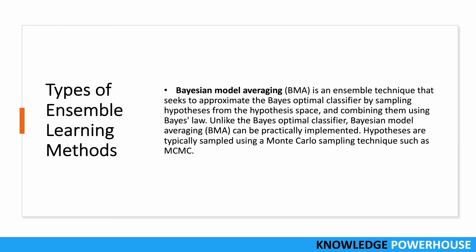Bayesian model averaging (BMA) is an ensemble technique that seeks to approximate the Bayes optimal classifier by sampling hypotheses from the hypothesis space and combining them using Bayes' law. Unlike the Bayes optimal classifier, BMA can be practically implemented. Hypotheses are typically sampled using a Monte Carlo technique such as MCMC, and these sampled models are then combined.